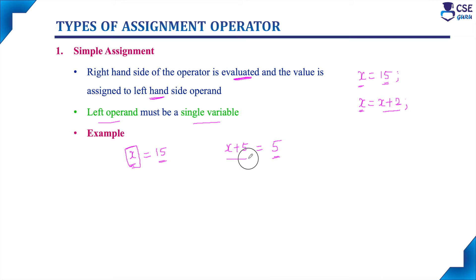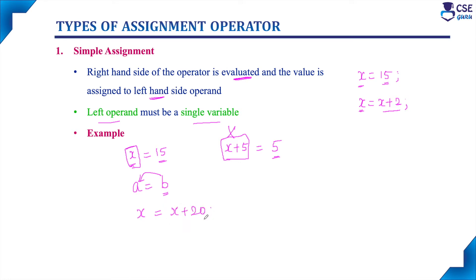The left-hand side should not be an expression — it must be a single variable. For example, b = 1 and a = b: the value of b is assigned to a. x = x + 20 is another valid example. In simple assignment, the right-hand side may be any kind of expression, which is evaluated to a single value and assigned to the left-hand side variable. Left-hand side expressions are not permitted.